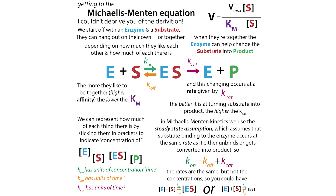The Michaelis-Menten equation comes down to these rate constants: your Kcat, your Kon, and your Koff.